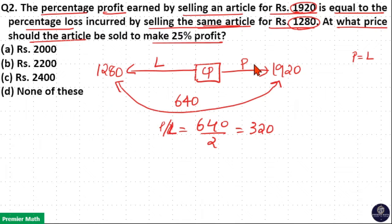That means here profit is equal to 320 and loss is equal to 320. So here 1920 minus 320 is the cost price, that is 1600 is the cost price.